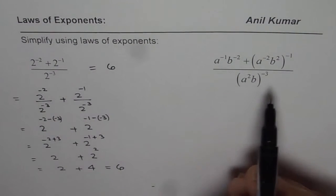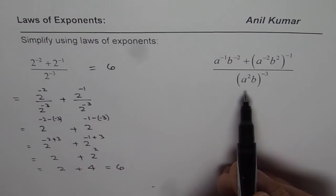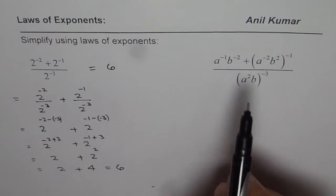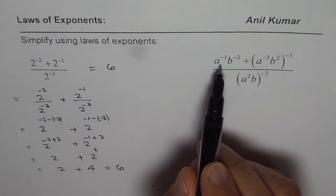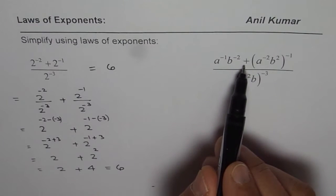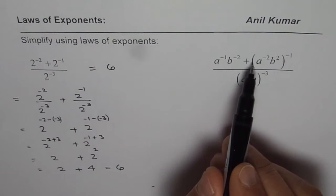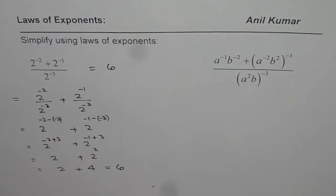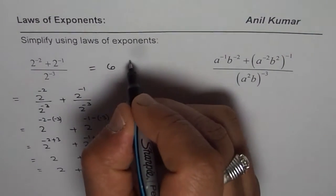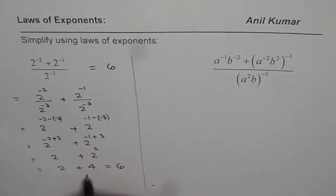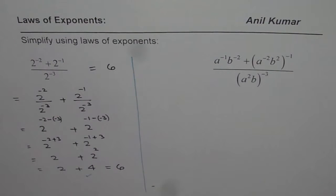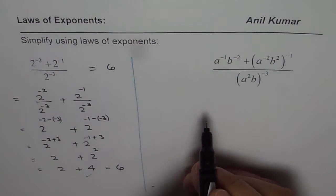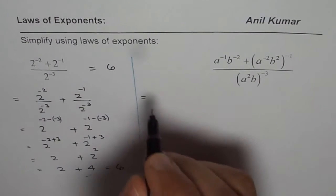Now let's apply these laws to simplify the second expression, which is in A and B. We have A to the power of minus 1 times B to the power of minus 2, plus A to the power of minus 2 times B squared to the power of minus 1, all divided by A squared times B to the power of minus 3. We will apply a similar strategy. You can pause the video and try this yourself before we work through it.